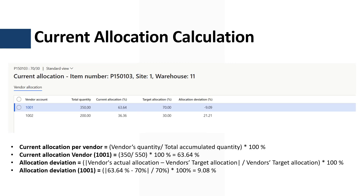Now let's review how the current allocation values have been calculated. First, we have the total quantity per vendor — this is the quantity purchased from the vendor during the past period in days specified in the policy, which is 180 days. Then we have the current allocation per vendor, calculated using this equation: the vendor total quantity divided by the accumulated total quantity for all vendors. So to calculate the current allocation for vendor 1001, it will be 350 divided by the total accumulated quantity of 550, multiplied by 100 — so the current allocation will be 63.64.